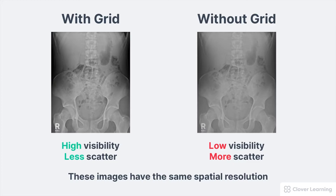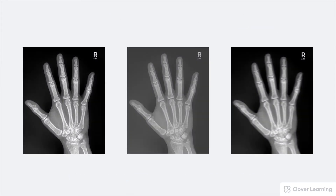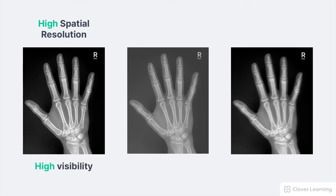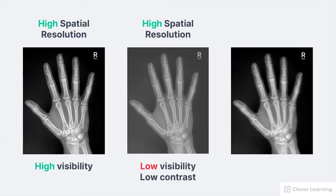It might be easiest to understand the definition of spatial resolution by thinking of one of the most common causes of poor spatial resolution, which is motion. The first image in this series shows very sharp structural lines, so high spatial resolution. The sharpness of the structural edges is very visible, so that's high visibility. The second image still has a high level of spatial resolution recorded in the image, but poor contrast has made the structural sharpness difficult to see. The last image shows very blurry structural lines because of motion — that's low spatial resolution because the structural edges are not sharp at all.